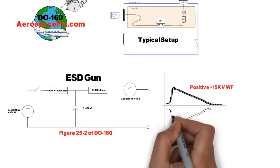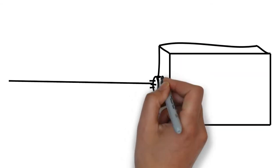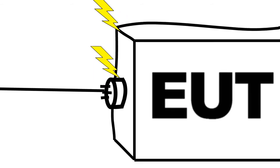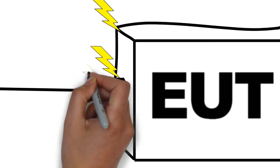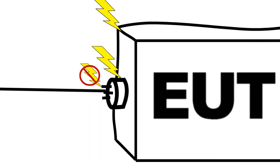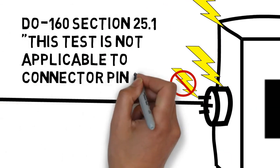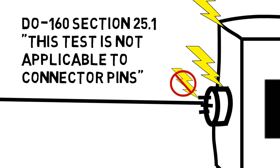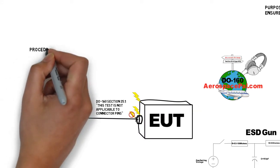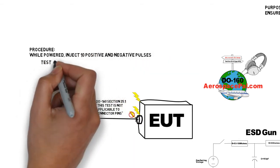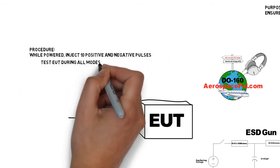For this test, inject a 15,000 volt ESD pulse on your unit at any possible human contact location for normal operation and maintenance mode. One misconception that I often see is that connector pins need to be tested — it specifically states in 25.1 that this test is not applicable to connector pins. While the EUT is powered on, inject 10 positive and 10 negative pulses on each point identified under all EUT modes of operation.